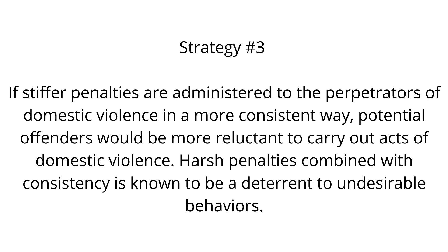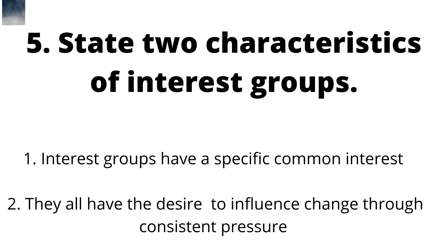Question five: state two characteristics of interest groups. All the questions answered so far from number one to four B would really be one question on the CXC paper, and number five is where number two would begin. Two characteristics of interest groups: one — interest groups have a specific common interest; two — they all have the desire to influence change through consistent pressure. Interest groups are really what we refer to as pressure groups, and they usually advocate for a specific cause.